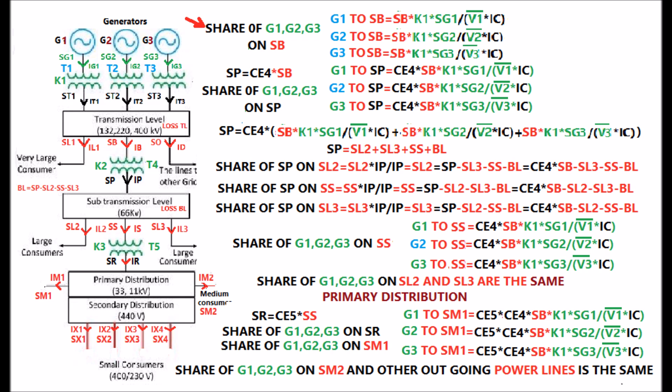The share of generators G1, G2, and G3 on the complex power SB input to transformer T4 is shown in the display. Now, the share of generators G1, G2, and G3 on the complex power SP is calculated and shown in the display. By adding all the sharing contributions, the generated SP can be determined as shown in the display.